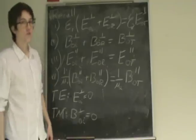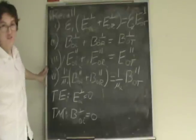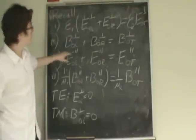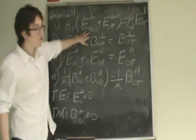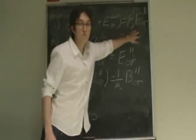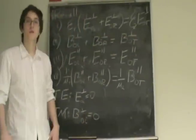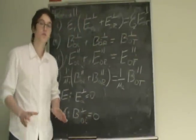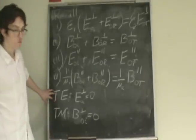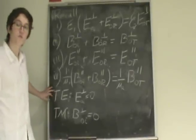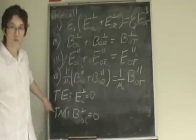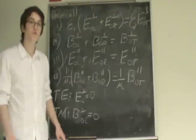We derived these equations in lecture 20, which are just the relationship of the incident part of the wave, the reflected part of the wave, and the transmitted part of the wave. We will explore two cases of polarization: the transverse electric, which is polarization perpendicular to the plane of incidence, and the transverse magnetic, which is polarization parallel to the plane of incidence.